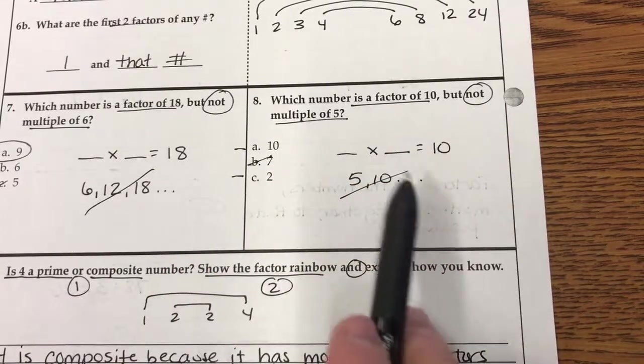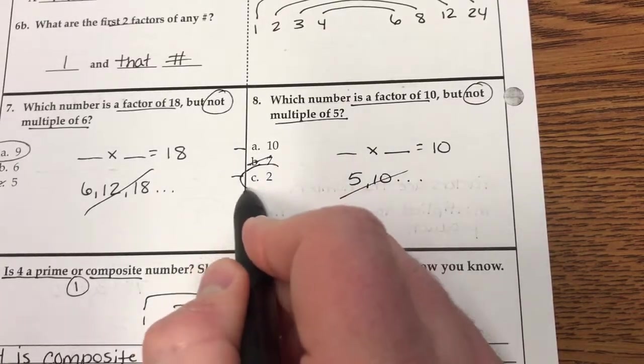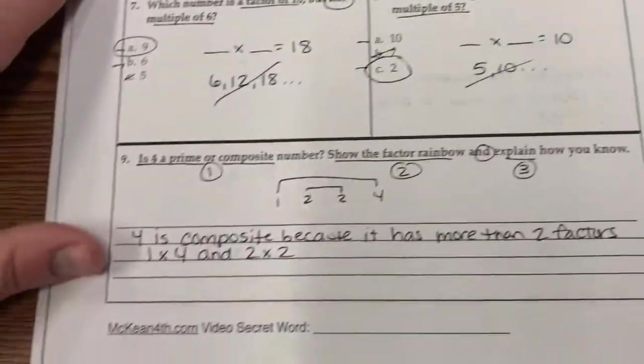I'll put a little tick mark by. Which one is not a multiple of 5? 2 is not a multiple of 5. I can't count by 5 and say that number. So it's not in that list.